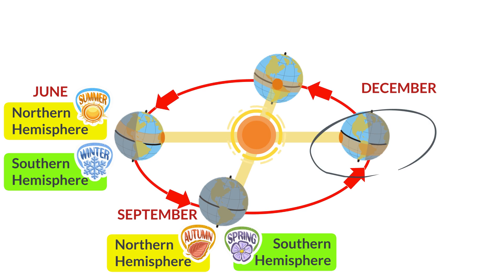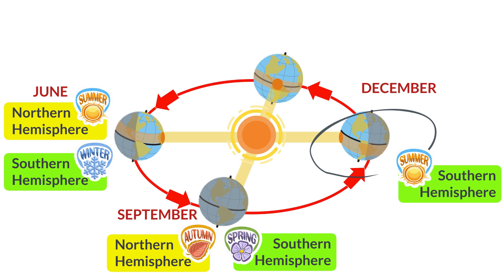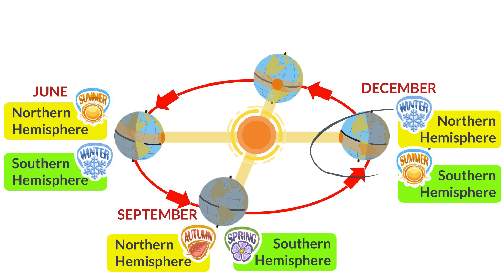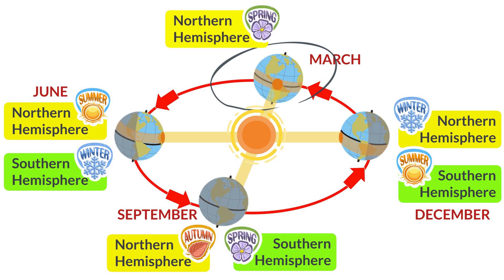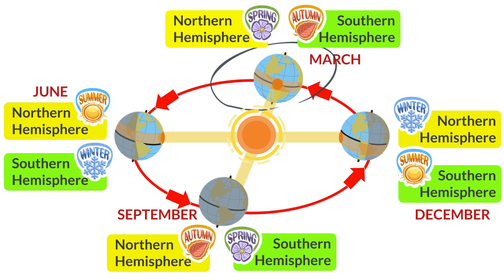From December to February, the Sun shines directly on the southern hemisphere and indirectly on the northern hemisphere. It is now summer south of the equator and winter north of the equator. From March to May, the Sun shines equally on the southern and northern hemispheres, and days have equal amounts of daylight and darkness. It is now spring season in the northern hemisphere and autumn season in the southern hemisphere.